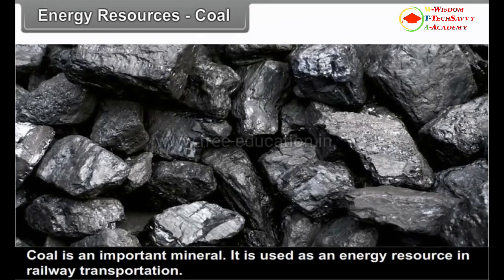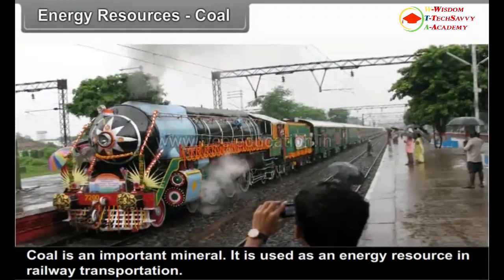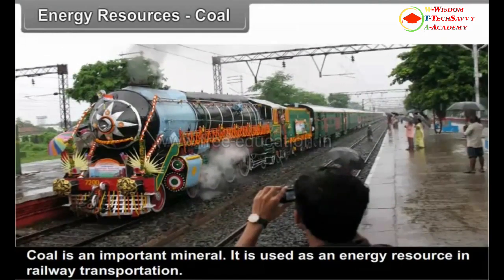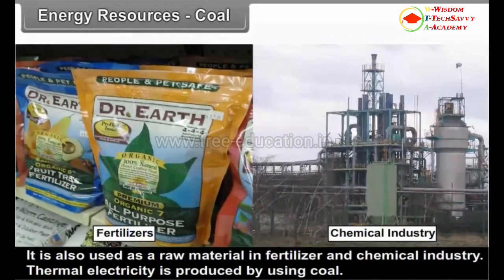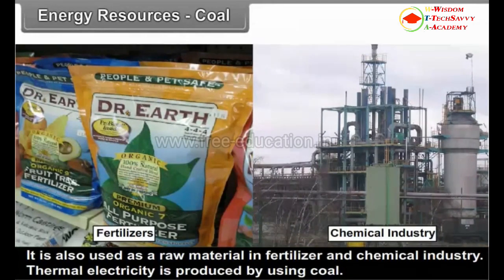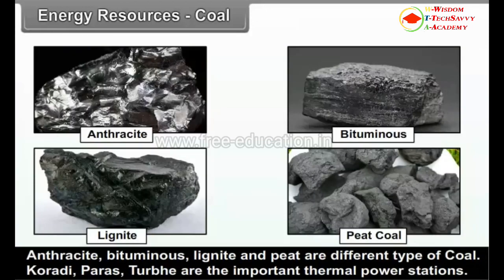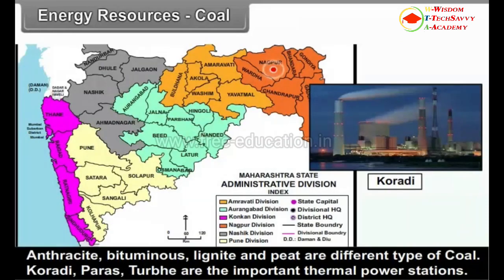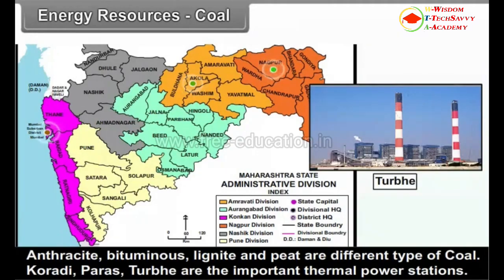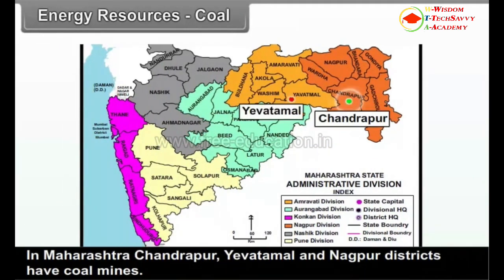Energy Resources — Coal. Coal is an important mineral used as an energy resource in railway transportation. It is also used as a raw material in fertilizer and chemical industry, and thermal electricity is produced using coal. Anthracite, Bituminous, Lignite and Peat are different types of coal. Koradi, Paras and Turbe are the important thermal power stations. In Maharashtra, Chandrapur, Yavatmal and Nagpur districts have coal mines.